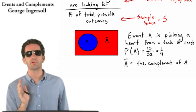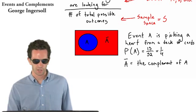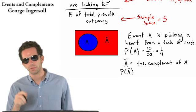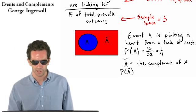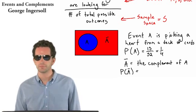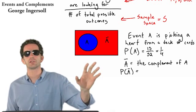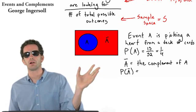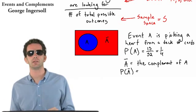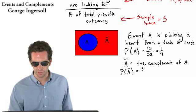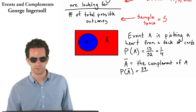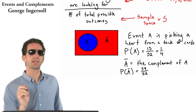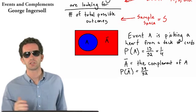And so we say, when we say, what's the probability of the complement of A? We write it just like we would write probability of A. We put that little dash over the A so we know it's the complement of A. Well, we can think about this. If there are 13 hearts in a deck of 52 cards, then that means there are 52 minus 13 equals 39. There's 39 other cards in that deck.